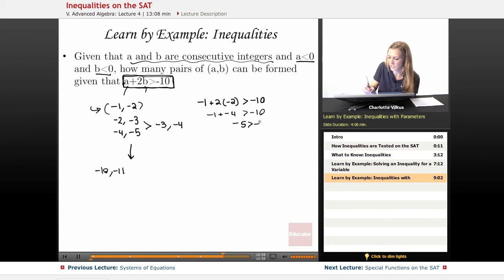give me negative 1 plus negative 4 is greater than negative 10 or negative 5 greater than negative 10, which is true. So I have at least one pair of A and B that can be formed.